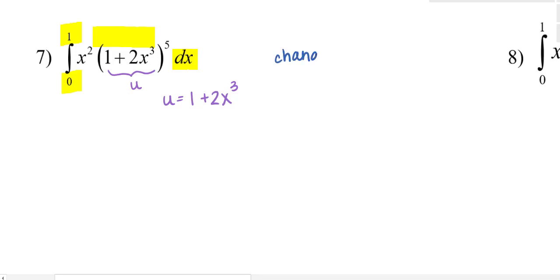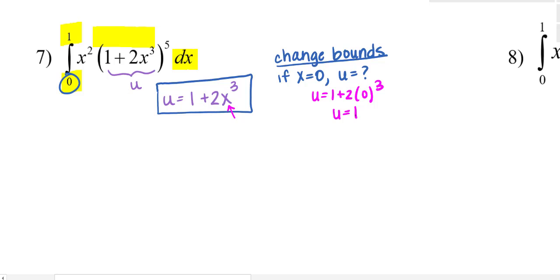So while I'm exchanging these x's for u's, I'm also going to do that with the bounds. So here I'll say change bounds. If x is 0, what is u? Because our lower bound is x equals 0. Well, this is our substitution equation: u equals 1 plus 2x cubed. So if x equals 0, I'm going to substitute 0 in for x. So I come up with u is 1.